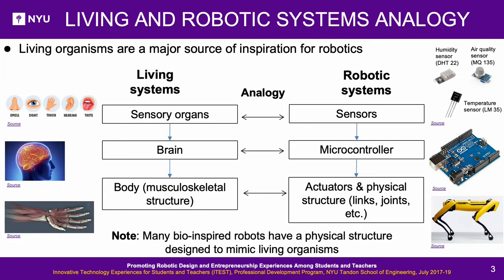Living organisms sense their environment through sensory organs and receptors, which send signals to the brain. The brain uses this sensory information to control the musculoskeletal system in response to these senses. For example, when a human touches a hot object and instantly moves the hand away. Similarly, a robot requires sensors, analogous to sensory organs, to gather information about its environment. A microcontroller, analogous to the brain, processes that information and makes decisions to control the robot's physical structure, which has actuators like motors and speakers, analogous to the body.